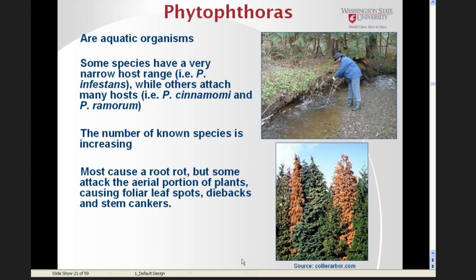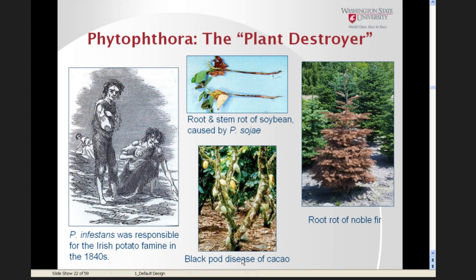The number of known Phytophthora species is increasing — new species are described each year. Most Phytophthoras cause root rots, but some attack aerial portions of plants causing foliar leaf spots, diebacks, and stem cankers. The name Phytophthora actually means 'plant destroyer.' The most famous is Phytophthora infestans, responsible for the Irish potato famine in the 1840s. Phytophthora cinnamomi is another very common and widespread species that causes problems in nurseries and forest situations.